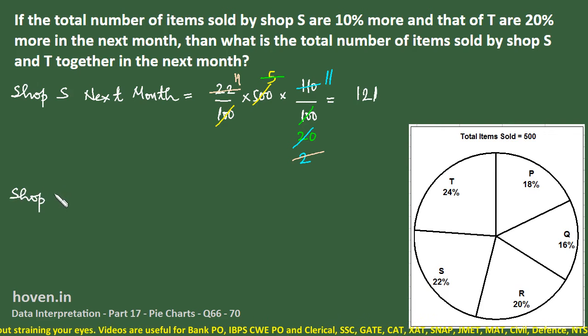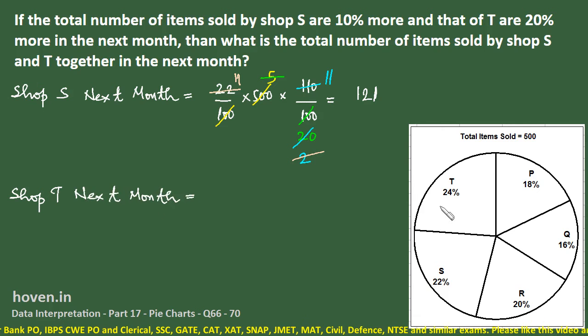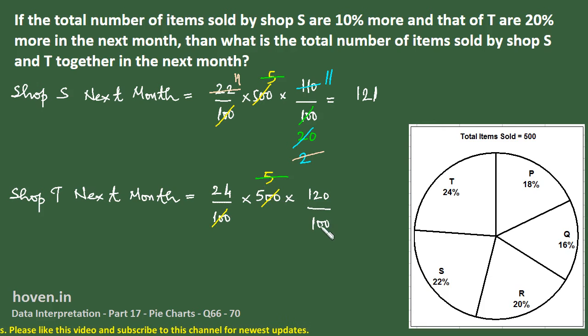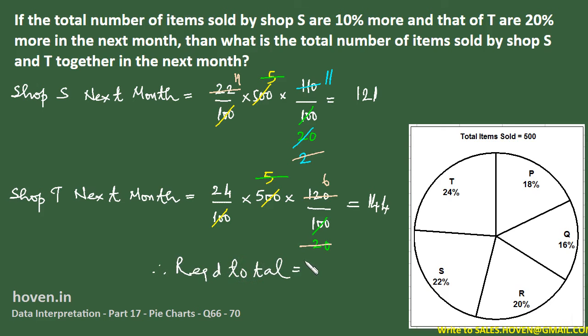Shop T next month: current month is 24 by 100 into 500. There is an increase of 20%, so next month will be 120 by 100. This gives 24 into 6, which is 144. And therefore, the required total is 121 plus 144, which equals 265 items, which is the required answer.